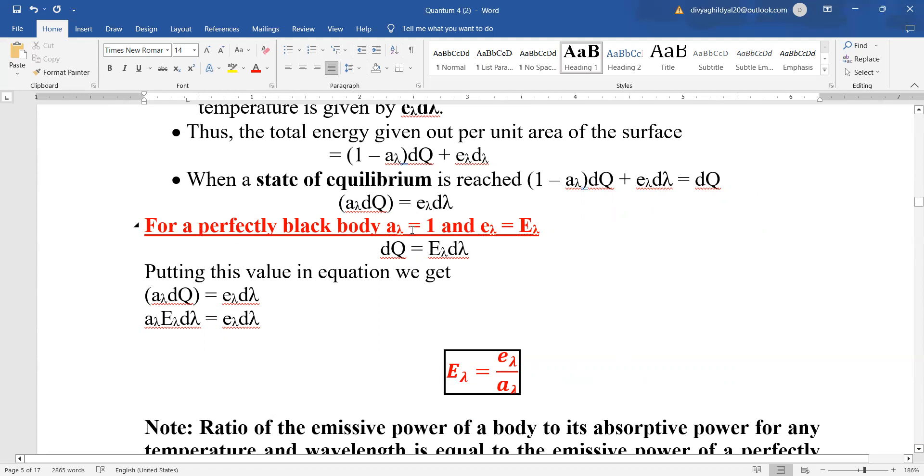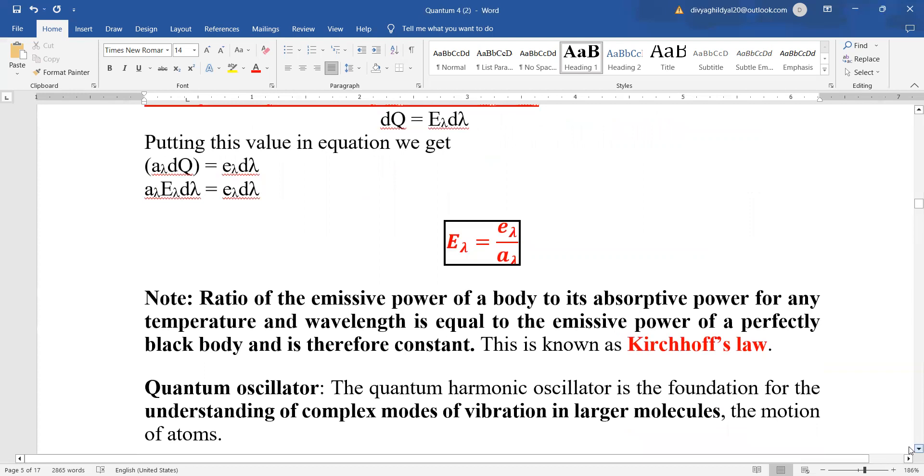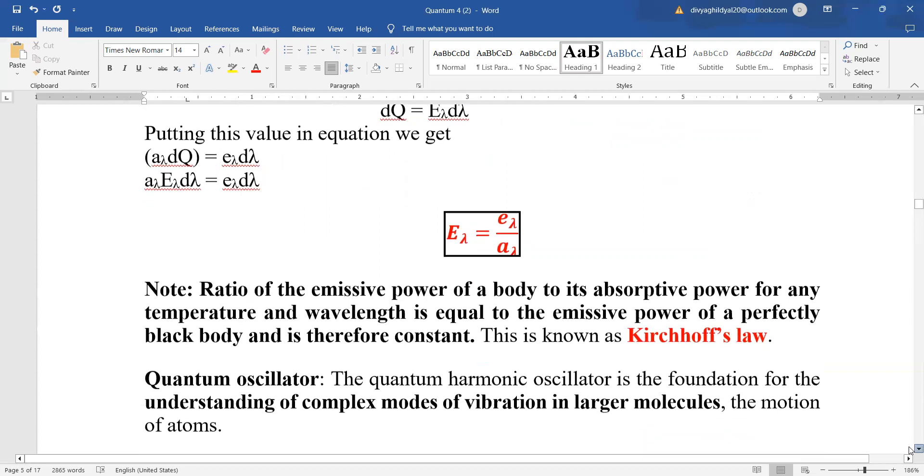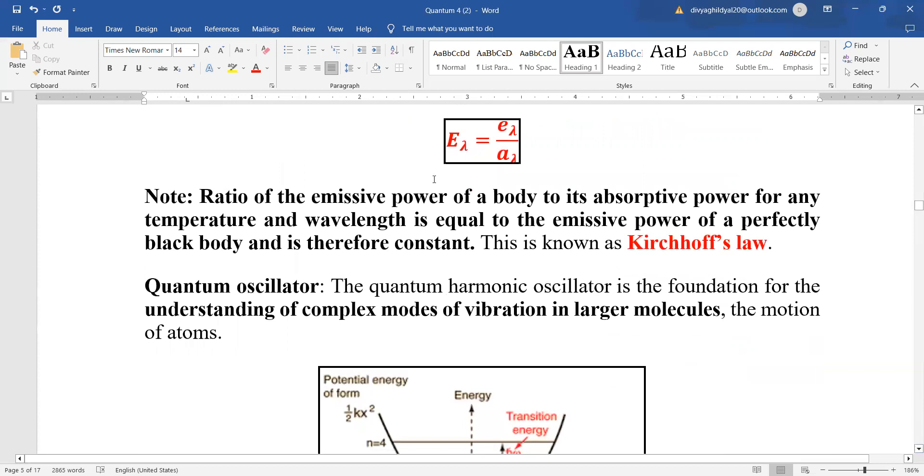For a perfectly black body, a_λ, the absorptive power, is equal to 1. If I put a_λ = 1, then e_λ becomes equal to E_λ. Putting this value in the expression, we get the ratio of emissive power of a body to its absorptive power for any temperature and wavelength is equal to the emissive power of a perfectly black body, and it is a constant. This is known as Kirchhoff's law, which has been asked many times in various competitive exams.